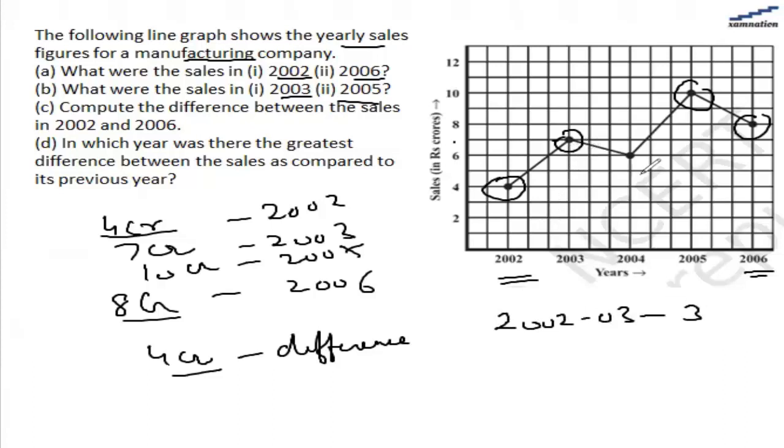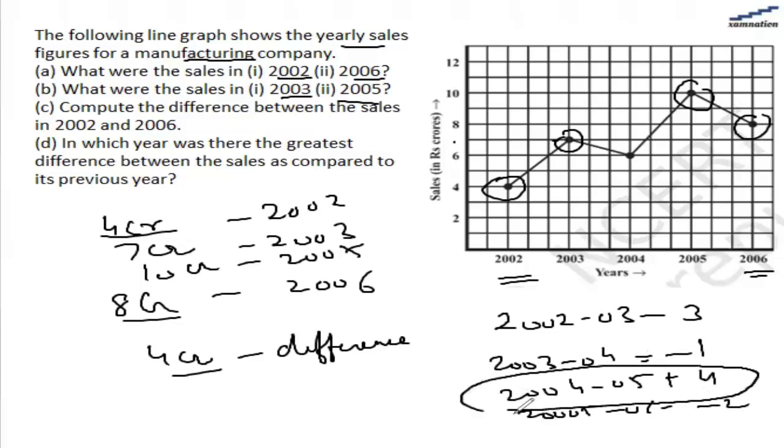Then from 2003 to 2004, it moved down from 7 to 6, so it is minus 1. And from 2004 to 2005, it moved up from 6 till 10, it is plus 4. And 2005 to 2006, it moved down from 10 to 8, it is minus 2. So from 2004 to 2005, the sale difference was maximum.